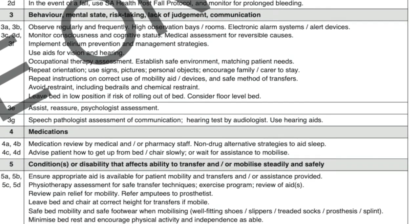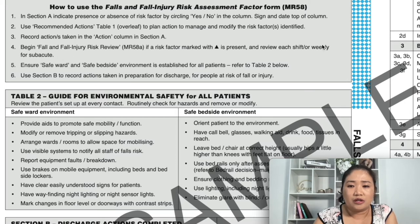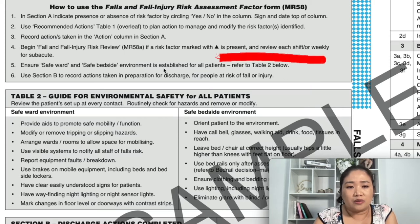Record actions taken in the action column in Section A for each fall and falls injury risk review. If a risk factor marked with a black triangle is present, review each shift. For a subacute setting, review only weekly. Ensure a safe ward and safe bedside environment is established for all patients.